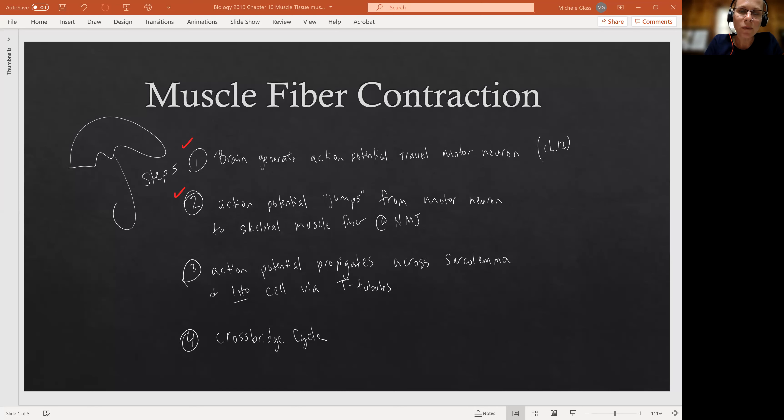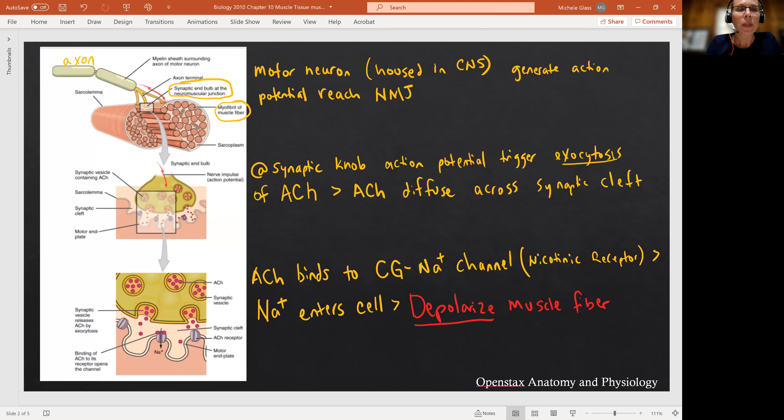Big step number two we focused on in our last video. So we looked at the details of that action potential jumping. You should have these notes already. So remember, the motor neuron is generating the action potential. When that signal reaches the synaptic knob, that's the enlarged end of the motor neuron, it's going to trigger the exocytosis of the neurotransmitter acetylcholine.